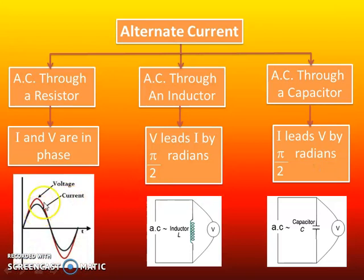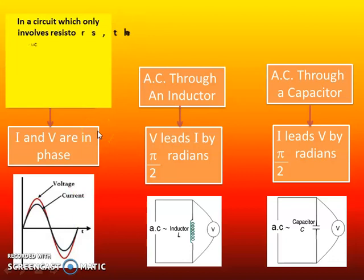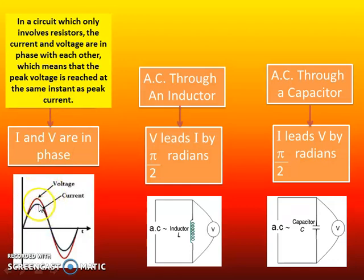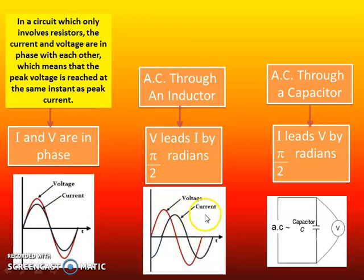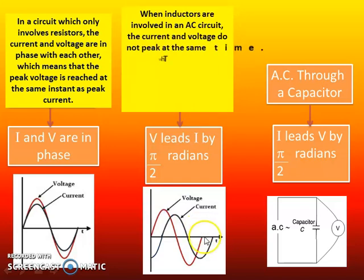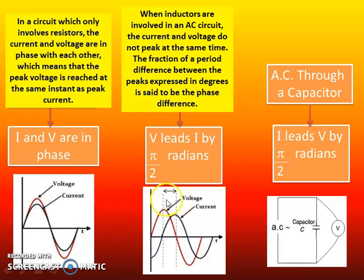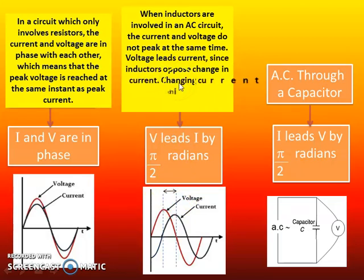If we plot voltage and current on the same graph in a circuit which only involves resistors, the current and voltage are in phase with each other, which means that the peak voltage is reached at the same instant as peak current, as shown by the blinking dot. If we plot voltage and I for AC through an inductor, when inductors are involved in an AC circuit, the current and the voltage do not peak at the same time. The fraction of a period difference between the peaks expressed in degrees is said to be the phase difference, which from the calculation we get as pi per 2 radians. Voltage leads current since inductors oppose change in current.